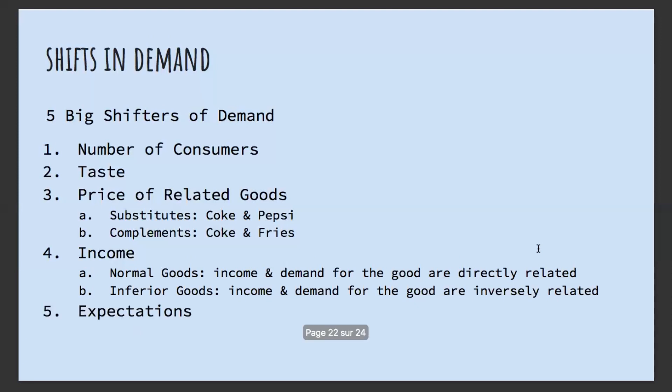The last shifter is expectations — whatever is expected in the future, whether we expect the price to rise or fall, or the market to produce a new good. Any expectations held by consumers can shift the demand curve.